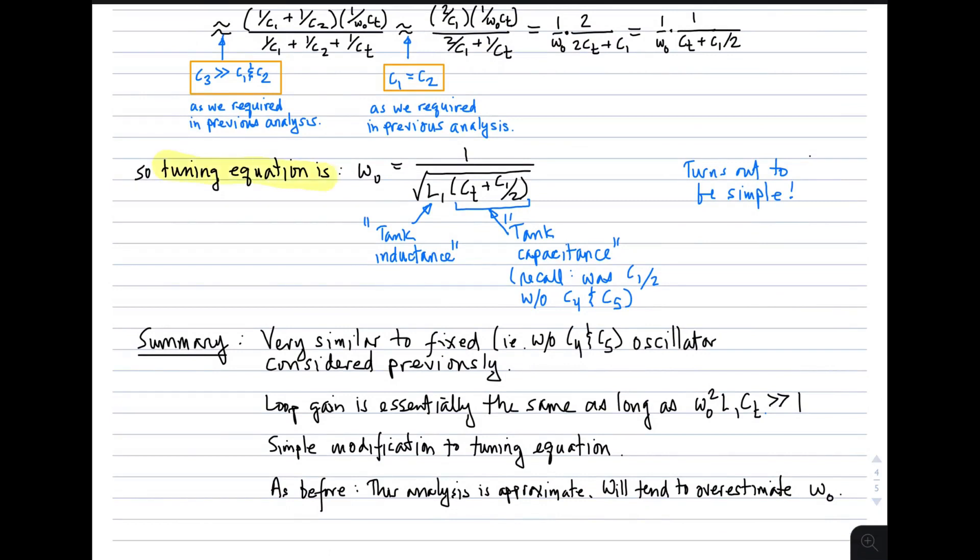So the tuning equation becomes this expression, which looks very similar to the expression that we got before. It is simply that we have a tank inductance which is still L sub 1, a tank capacitance which is modified slightly. Before it was just C1 divided by 2, now it's C1 divided by 2 plus that tuning capacitance C sub T, which is a series combination of C4 and C5. So this turns out to be quite simple.